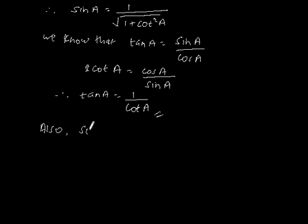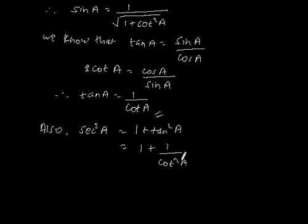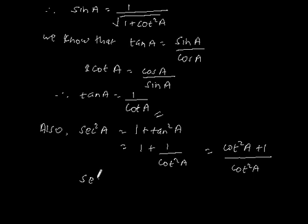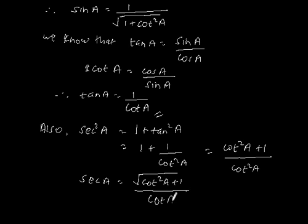Also, sec square a is equal to 1 plus tan square a. This is equal to 1 plus 1 by cot square a, which gives cot square a plus 1 divided by cot square a. So, sec a is equal to square root of cot square a plus 1 divided by cot a, which is our answer.